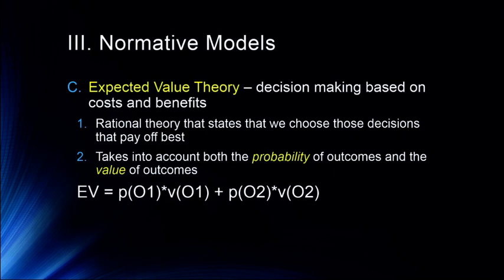For example, if we bet $5 on a coin toss: the probability of winning is 50% and the value is +$5; the probability of losing is 50% and the value is -$5. So 0.5 × $5 = $2.50, plus -$2.50, gives an expected value of zero.